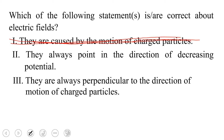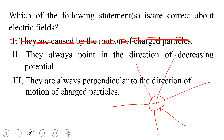Then let's look at statement two: they always point in the direction of decreasing potential. Let's think about a positive charge — the lines of force are directed radially outwards. What this implies is that when we put a test positive charge at any point, it will move in the direction of the arrows, and when that happens we say that that test charge is moving in the direction of decreasing potential. Hence, we can say that statement two is reasonable and acceptable.